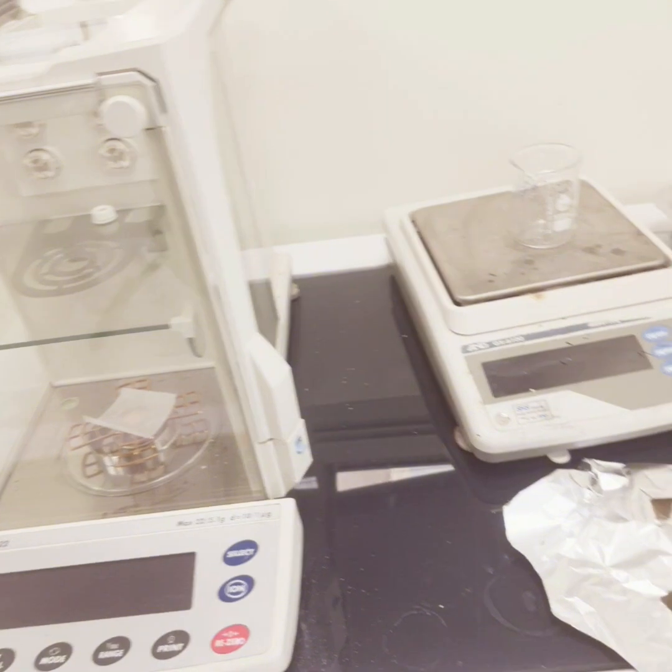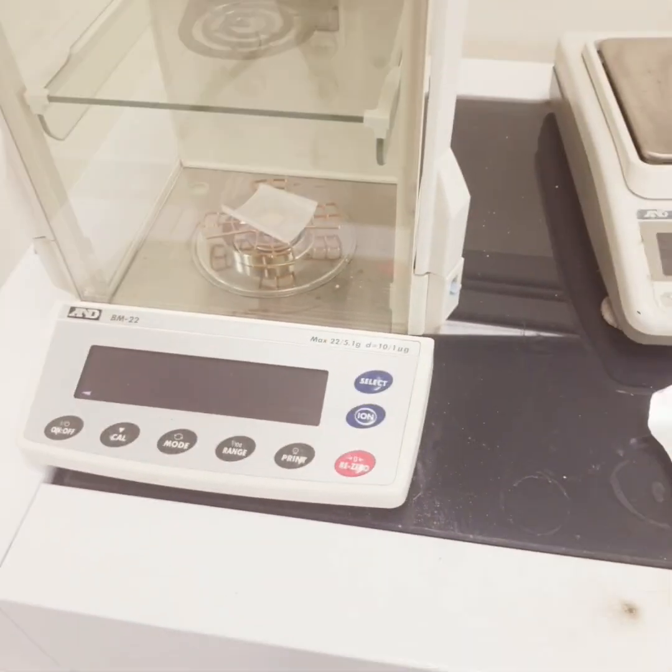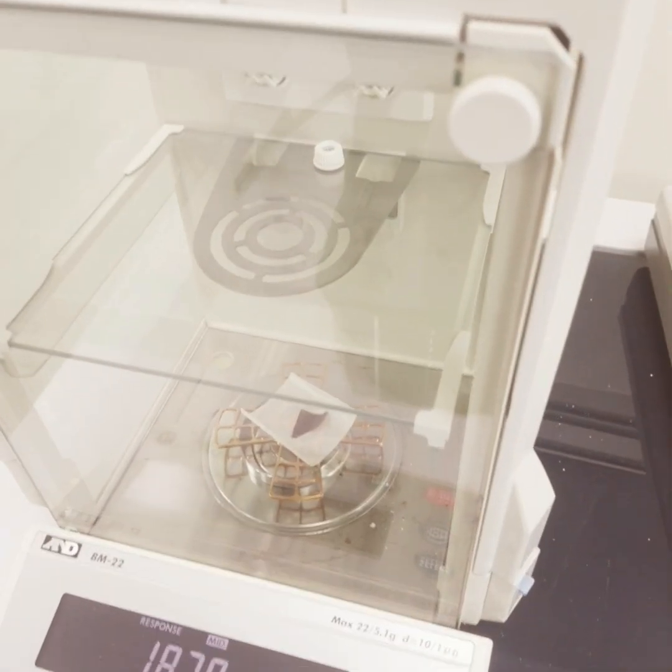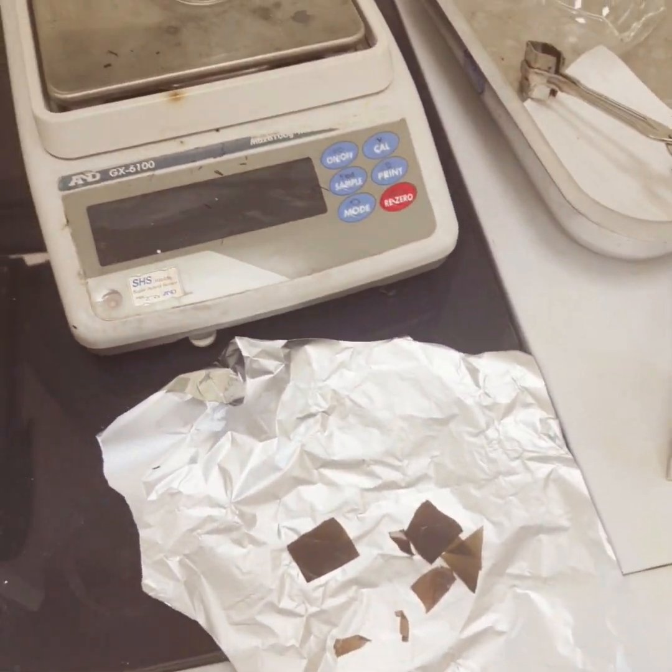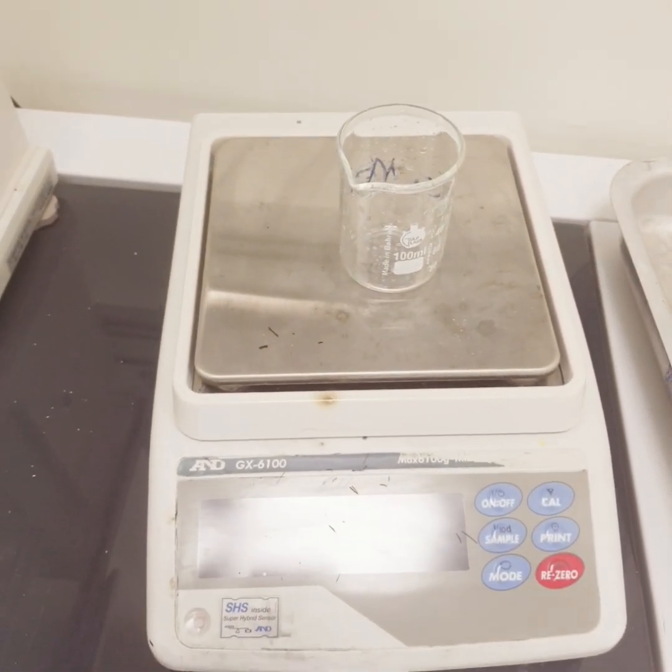First of all we will weigh this membrane. This is around 18 milligram of the membrane. Now we will transfer this portion. Before transferring the methylene blue solution to the jar or flask, we will first of all measure its concentration.